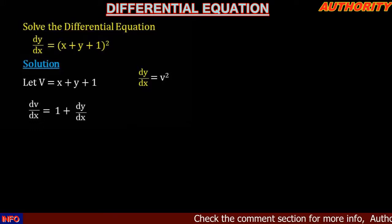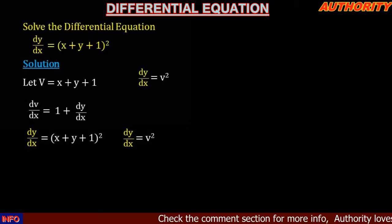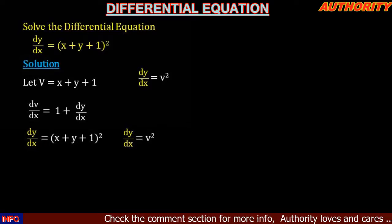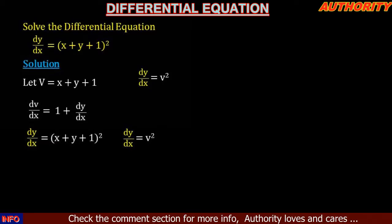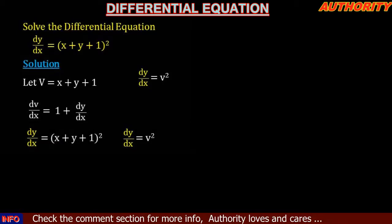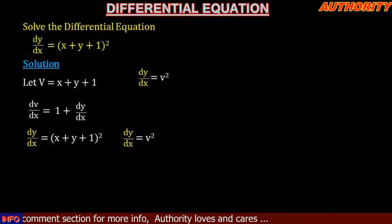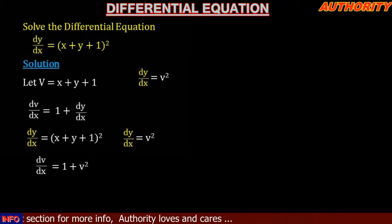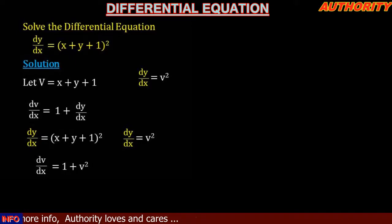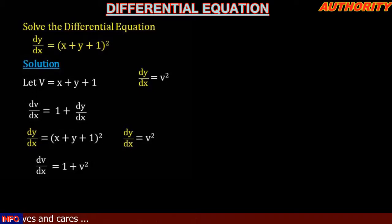So dv/dx = 1 + dy/dx. But we said that dy/dx = v², so in place of dy/dx we substitute v². That means we now have dv/dx = 1 + v².